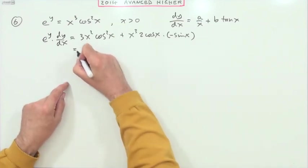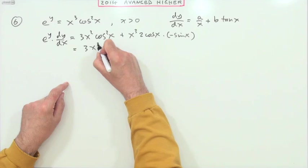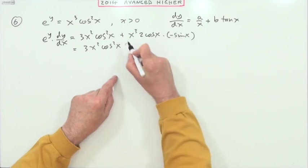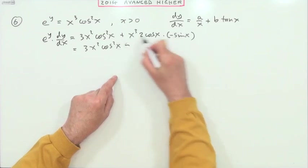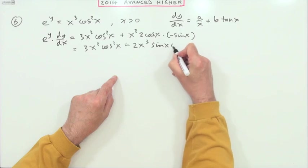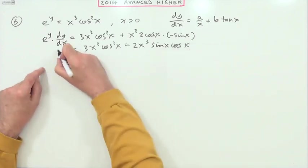Now tidying that up, I've got 3x squared cos squared x minus 2x cubed sin x cos x over x cubed.